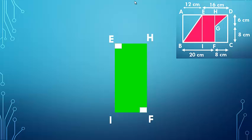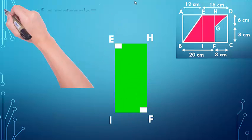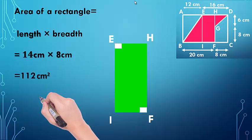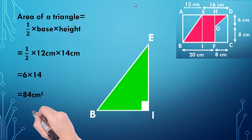Next is rectangle EHIF. The formula for area is length × breadth, so 14 × 8, which is 112 centimeter square. The next shape is triangle EIV. Using the formula half × base × height again: the base is 12 centimeters, height is 14 centimeters, and after solving we get 84 centimeter square.